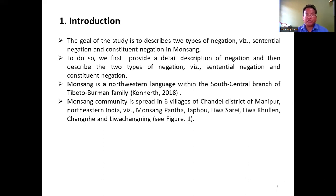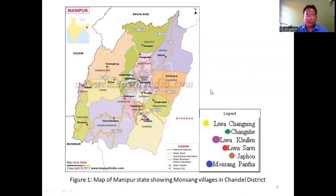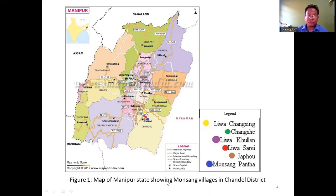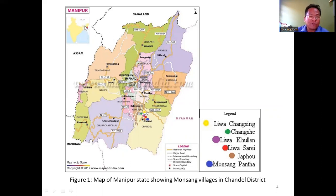Monsang's community is spread in six villages of Chandel district of Manipur, which is in the northeastern part of India. Monsang speakers are found in six villages, and they are marked with six different colors. Figure one shows the map of Manipur state showing Monsang's villages in Chandel district. This is the Chandel district, and this map is the Manipur state map, which is in the northeastern part of India.